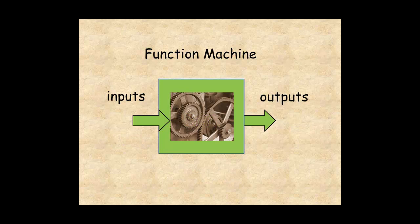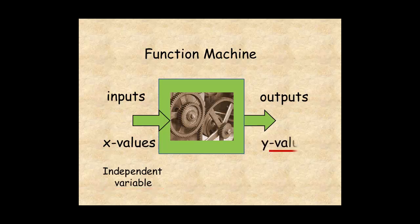The inputs to the function are the x values, and the x variable is called the independent variable. The outputs from the function are y values, and the y variable is called the dependent variable, because the output depends on the input.